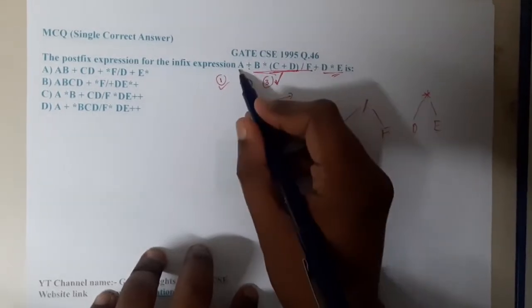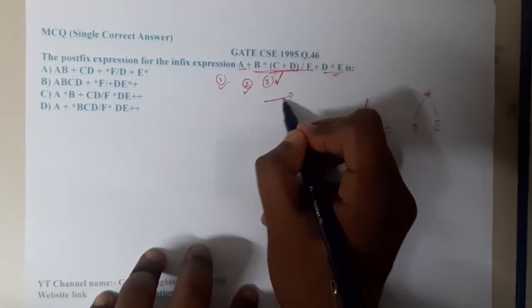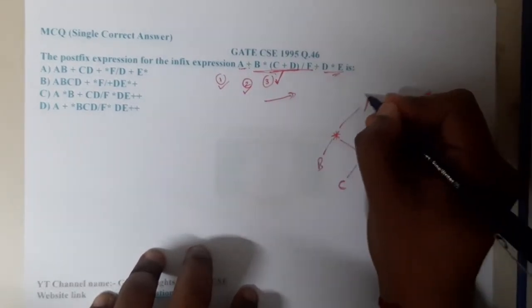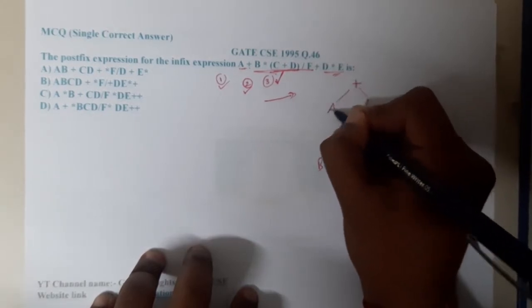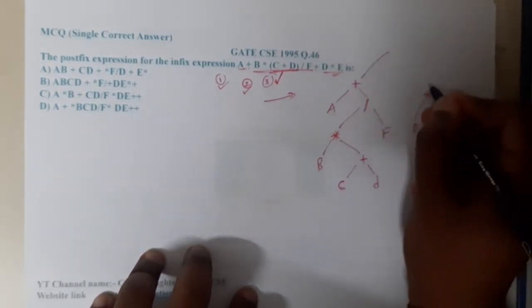This whole part is done. Now we are left with these two operations. This will occur first as we are following left to right associativity, so these two will be added. And at the end, these two will be added.